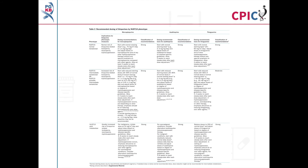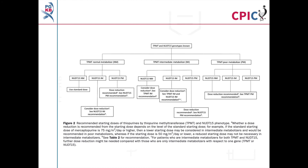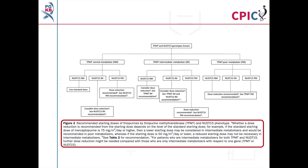The dosing recommendations for thioguanine by NUDT15 phenotype, in addition to those for azathioprine and mercaptopurine, can be found in Table 3 of the guideline, with detailed footnotes at the bottom of that table. Figure 2 in the guideline shows how to select an appropriate prescribing action if both the TPMT and NUDT15 genotypes of a patient are known; detailed footnotes are given in the figure legend.